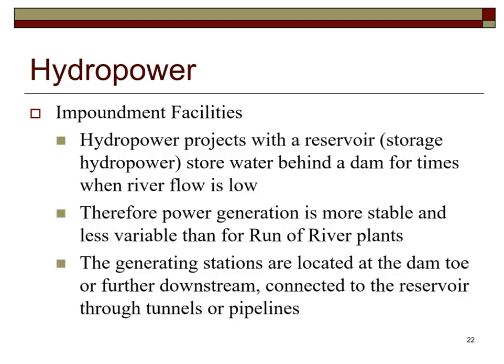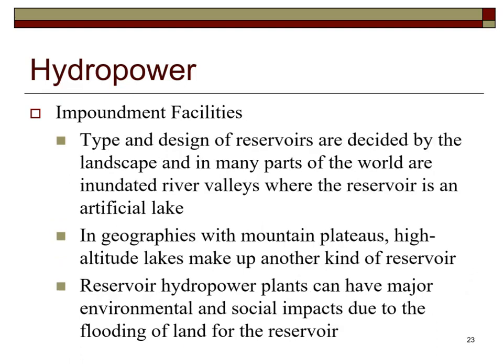With impoundment facilities, hydropower projects with reservoir storage keep water behind a dam for times when river flow is low, making power generation more stable and less variable than run-of-river plants. Generation stations are located at the dam toe or further downstream, connected to the reservoir through tunnels or pipelines. Reservoirs may be artificial lakes in river valleys or high-altitude lakes on mountain plateaus.